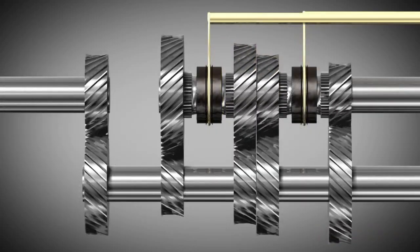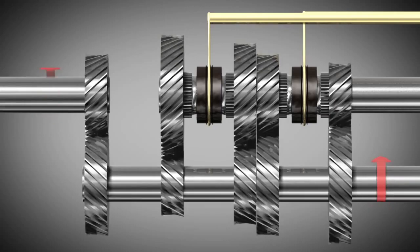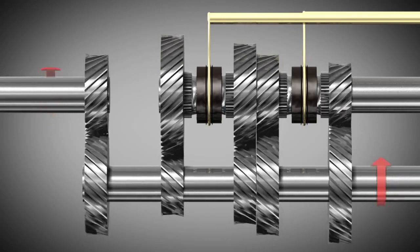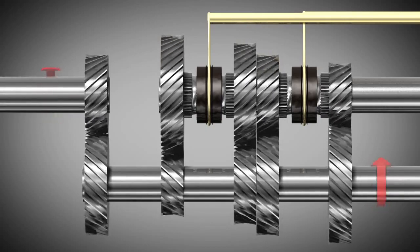The gear wheels of the input shaft and the counter shaft are fixed to their shafts. They rotate when their corresponding shaft rotates. However, the gear wheels of the output shaft are not fixed to the shaft and can freely rotate.